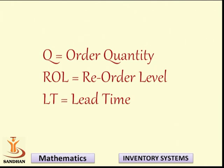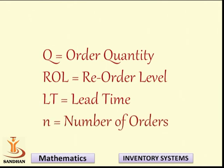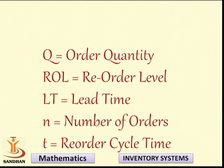LT denotes lead time — the time lag between placing an order and receiving the delivery, also called delivery lag. Small n indicates the number of orders, while capital N indicates the optimum number of orders. Small t denotes reorder cycle time — the time between two successive replenishments. For example, if one order is received on the 5th and the next on the 30th, the reorder cycle time is 25 days.